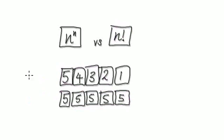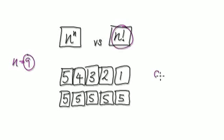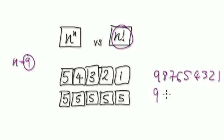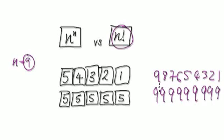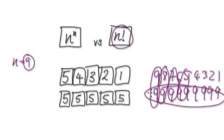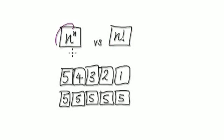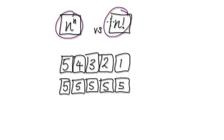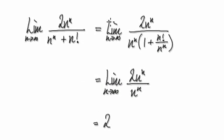If you increase n, let's say n equals 9. n factorial when n equals 9 would be 9 times 8, 7, 6, 5, 4, 3, 2, 1. And then n to the power of n would be 9, 9, 9, 9, 9. If you pair these up, you can see that n to the power of n would be much bigger than n factorial. So realize that n to the power of n would be much, much bigger than n factorial as n tends to infinity.